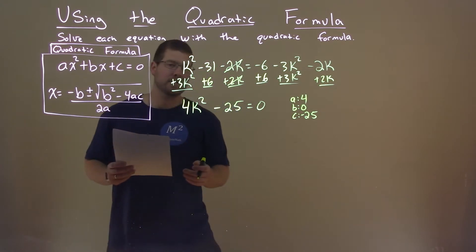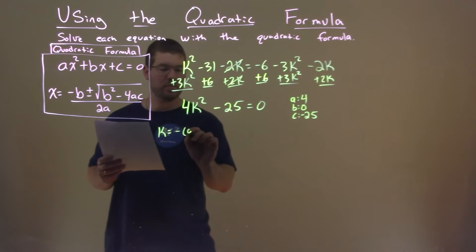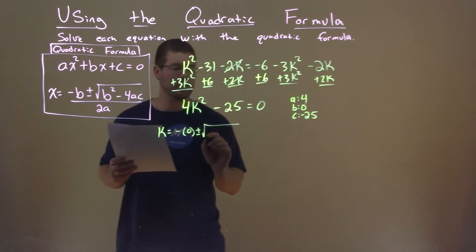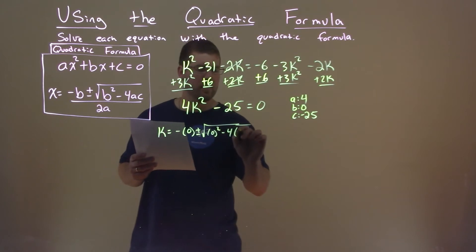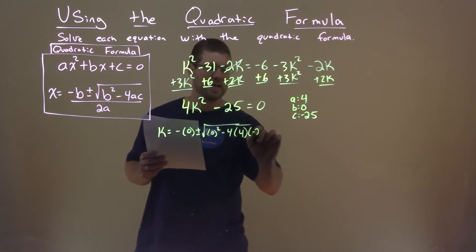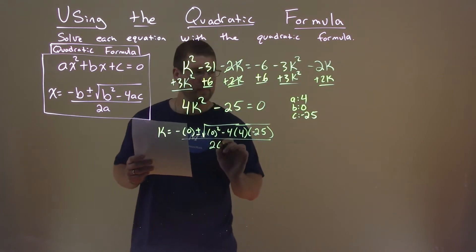With that information, we have to use the quadratic formula. So k equals negative b, which is 0, plus or minus the square root of 0 squared minus 4 times a, which is 4, times c, which is negative 25, all over 2a. And that's 2 times 4.